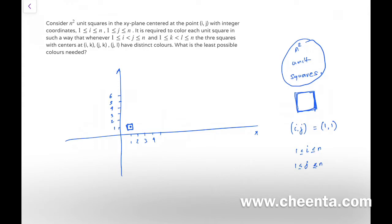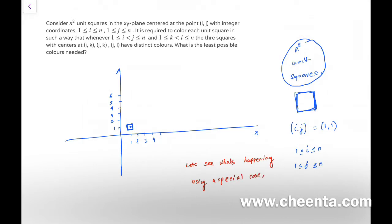Like any combinatorics or mathematics problem, things become extremely clear when you take a particular case. So let's see what's happening using a special case — this is a very useful problem-solving strategy. Whenever you are lost in the statement of a problem, try to see with a special case what's happening. We will try with the case n equals 4.